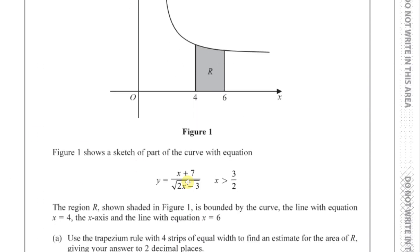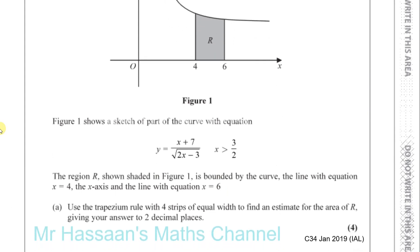x must be greater than 3 over 2 for two reasons: it can't be equal to 3 over 2, otherwise this will become 0, and it can't be less than 3 over 2, otherwise this will be the square root of a negative number. In both cases it will be undefined, so x must be greater than 3 over 2. The region R shaded in the figure is bounded by the curve, the line x equals 4, the x-axis, and the line x equals 6.